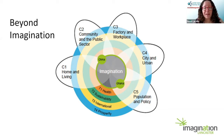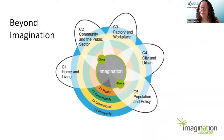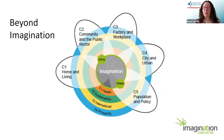The aim of Beyond Imagination is to expand research into different areas which have critical impact on society. Research is organized into clusters with different topic areas — quite broad ranging, covering home and living, city and urban, community and public sector. The cluster I'm in is called Population and Policy, looking at how design can be used to address large-scale population issues and how we can use design to think about developing new policy.